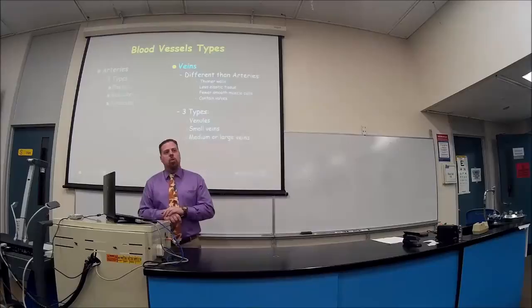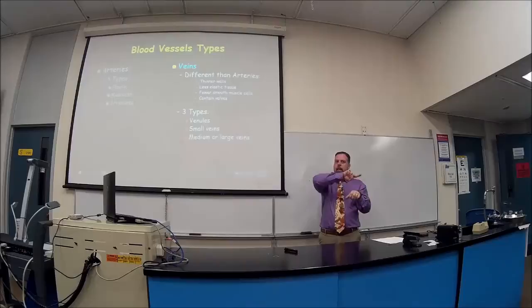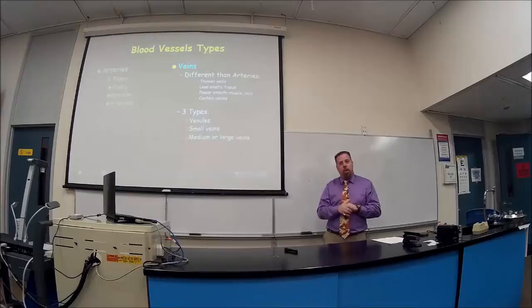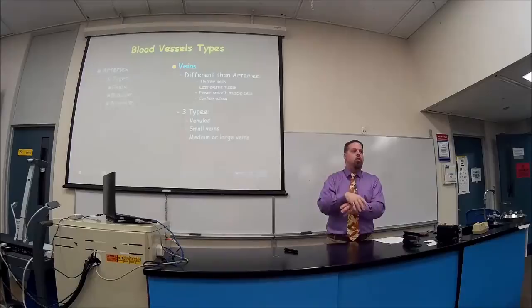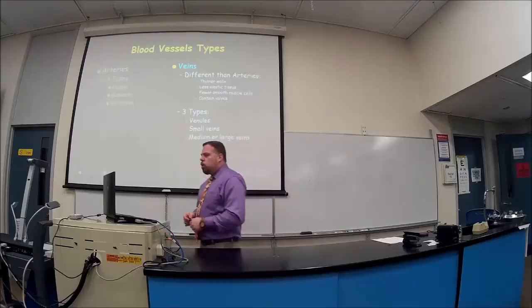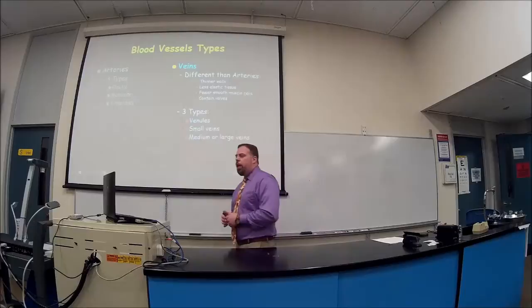Veins have thinner walls than arteries. Think of an artery as a garden hose — it has a memory to its shape and is very thick. Veins are more like a fire hose with more flexibility; if you let it sit there it'll contort to whatever shape you want because there are fewer elastic fibers. The three vein types are venules, which are the smallest going from capillaries back to veins, then small veins, and medium to large veins grouped together because they're very similar.